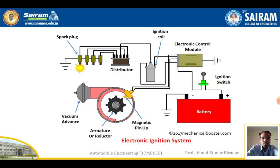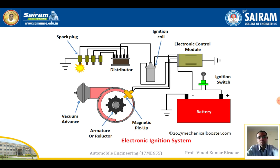To summarize the working: from the battery, a small amount of current passes to the ECM. Based on the ignition switch being on, the ECM transfers power to the armature and ignition coil. After some time, the current flow from the armature stops; the primary winding current is also interrupted, generating a high EMF in the secondary coil. This large voltage is transferred to the distributor and then to each spark plug, where ionization causes ignition and combustion, generating power to run the vehicle.